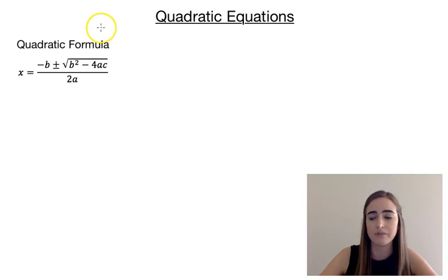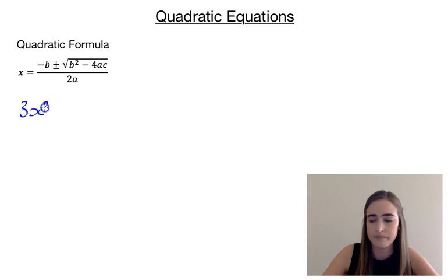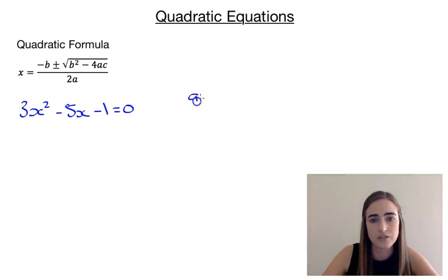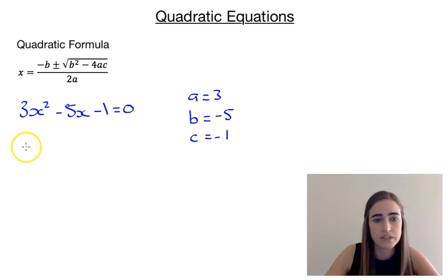For our second example, we're going to solve a new quadratic equation using the quadratic formula. Our equation is 3x squared minus 5x minus 1 is equal to 0. That means our a value is the coefficient of x squared, so a equals 3. Our b is the coefficient of x, so that's minus 5. And our c is the constant term, so that's minus 1.